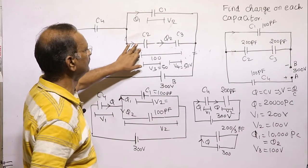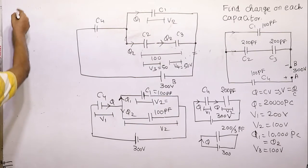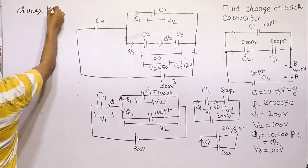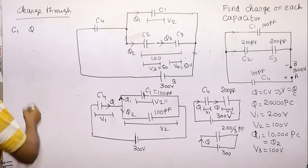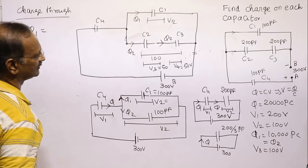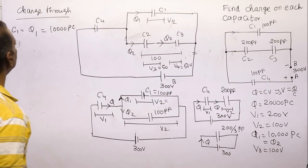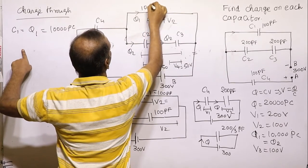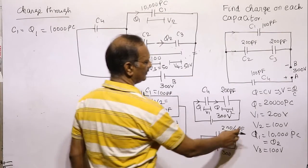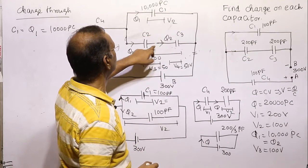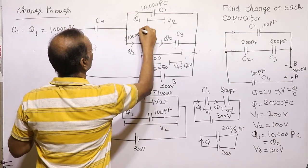We have now found the charge across all capacitors. To summarize: charge through C1 equals Q1 = 10,000 picocoulombs. Charge through C2 also equals Q2 = 10,000 picocoulombs, since C1 has the same capacitance.